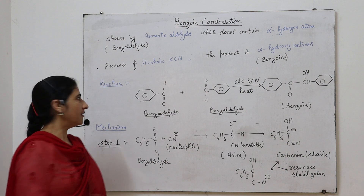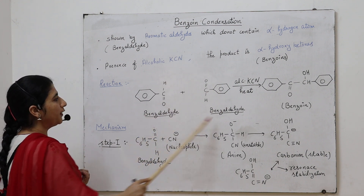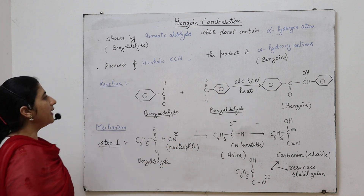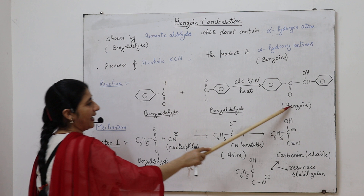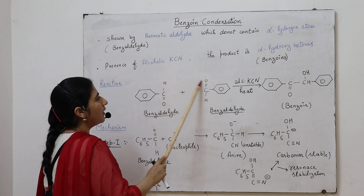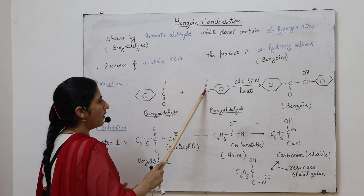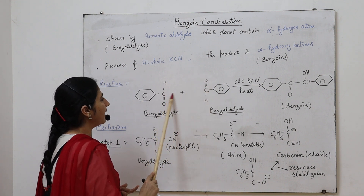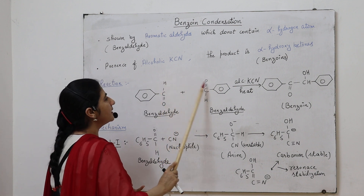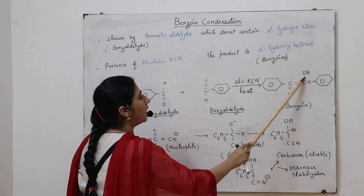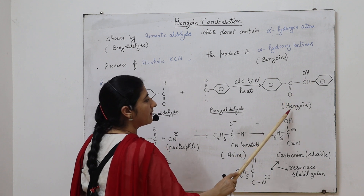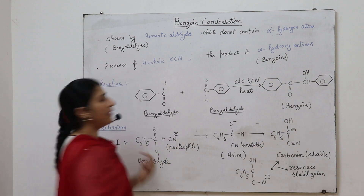In benzoin condensation, we take two molecules of benzaldehyde which are heated in the presence of alcoholic KCN solution. We get benzoin as a product. There is a transfer of a proton toward the oxygen, resulting in formation of a single bond, and the two aldehyde molecules are combined with the formation of a carbon-carbon sigma bond. So the aldehyde group is converted into an alcohol group, and the compound contains both a ketone and an alcohol — this compound is named benzoin.